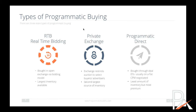On the right-hand side, we have Programmatic Direct, sometimes called Programmatic Guaranteed. This is bought through a deal, usually on a flat CPM basis. It is, in general terms, the least amount of inventory available, but it's usually reserved for the most premium. This is where you get first-look type of deals and some special formats that are available.